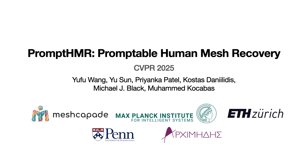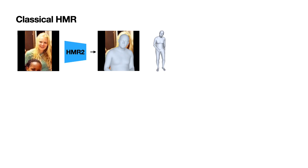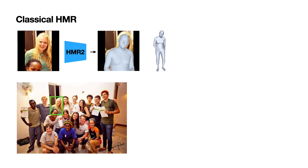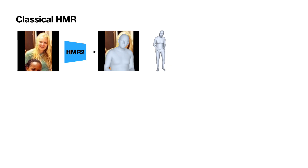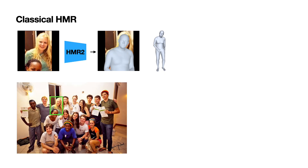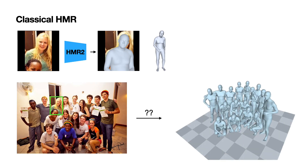We present PROMPT-HMR, a method for promptable human mesh recovery. Human mesh recovery is classically viewed as a pixel-to-parameter regression problem. In particular, most methods take a tightly cropped image and output the parameters of one person. This narrow definition discards broader context present in the full image, preventing current approaches from reconstructing scene-grounded 3D humans and meaningful social interactions.